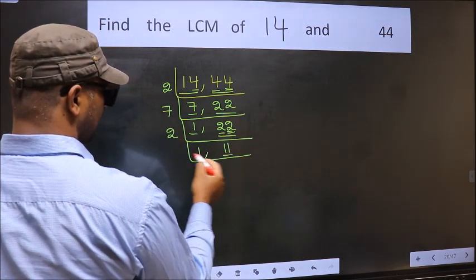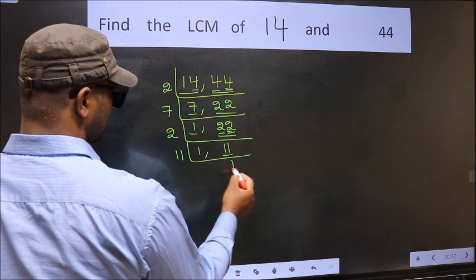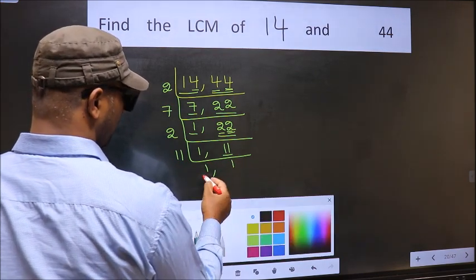So here we have 11. 11 is a prime number, so 11 times 1 is 11. So we got 1 in both.